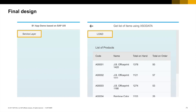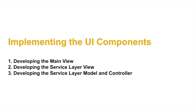We will have two views. The first one is the main view, having one button calling the service layer page. On the right side you see the second view, which is the service layer page with a load button which will trigger the service layer GET method for the list of products. This exercise is divided in three parts. In the first video, you will see how to create a project using SAP Cloud Platform and develop your main view. In the second video, you will see how to develop the service layer view, and in the third video, how to develop the controller and bind the data to the view.